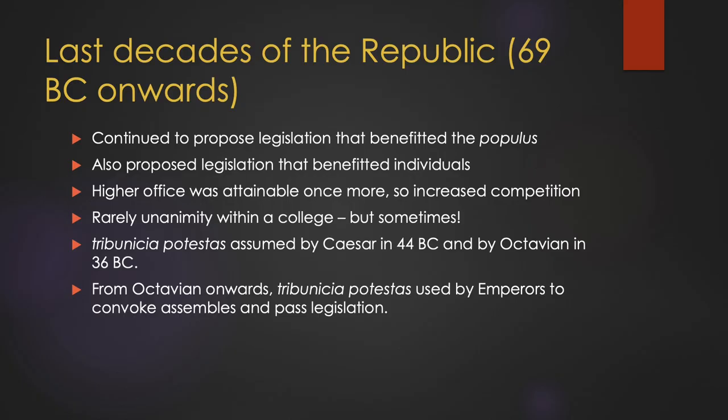Unfortunately, towards the end of the Republic, Tribunicia Potestas was assumed by Gaius Julius Caesar and Octavian in 44 and 36 BC respectively. This meant the demise of the Tribune of the Plebs. The office was effectively nullified.